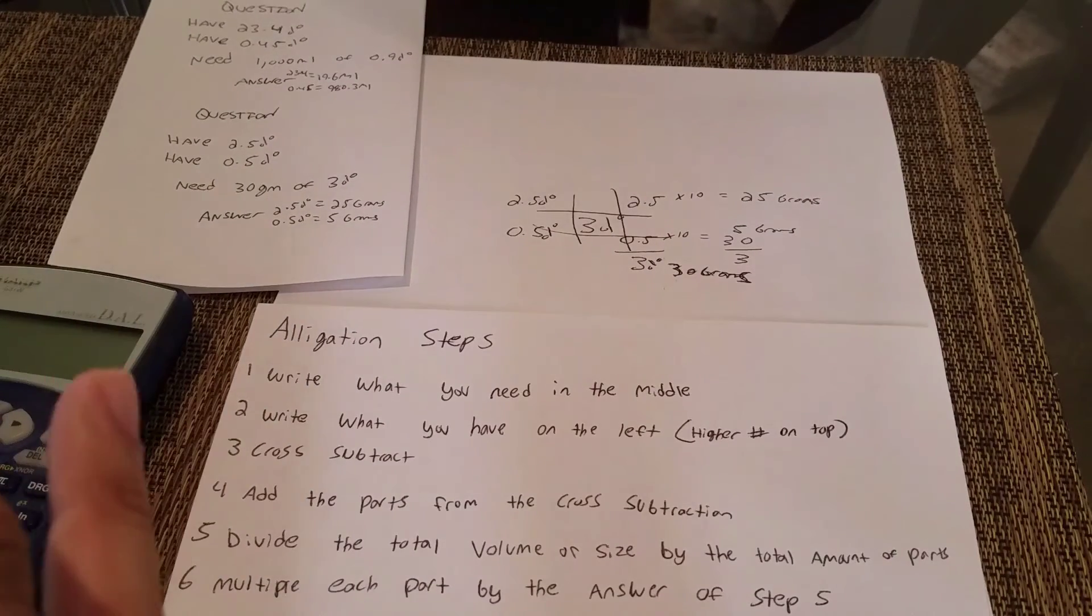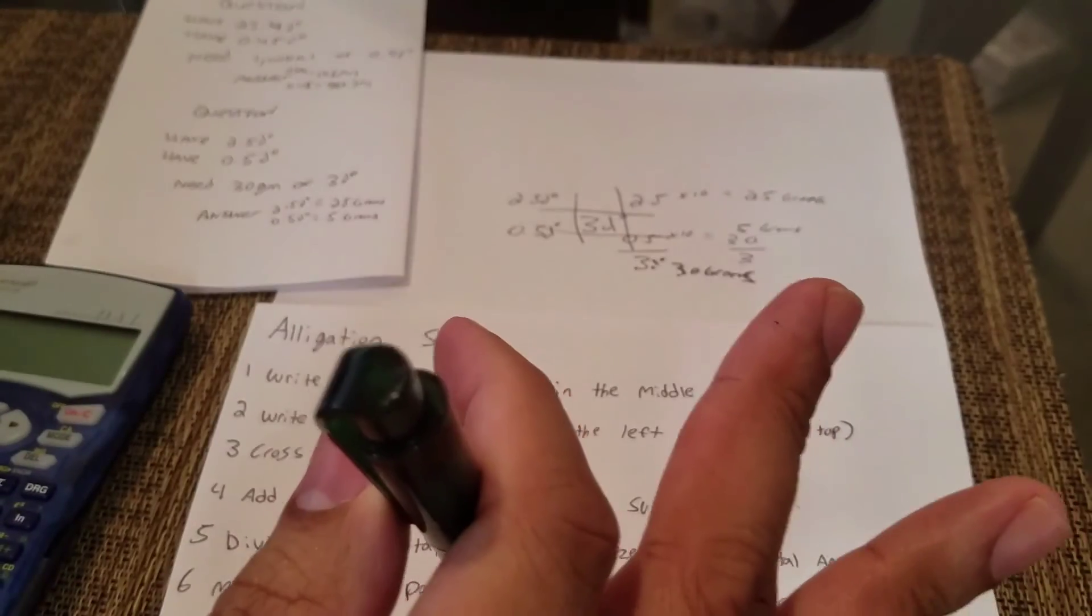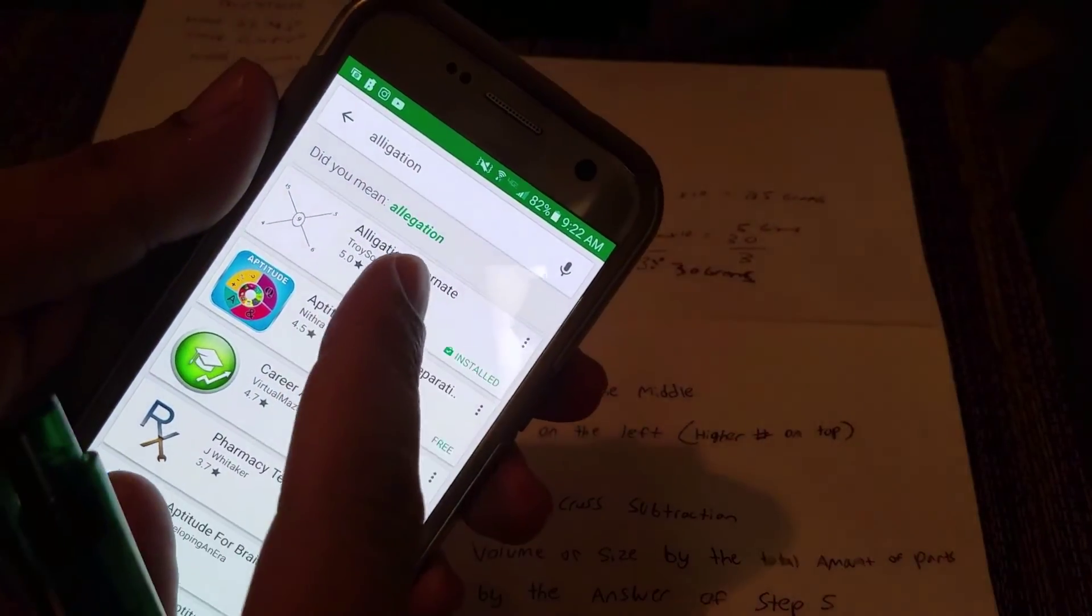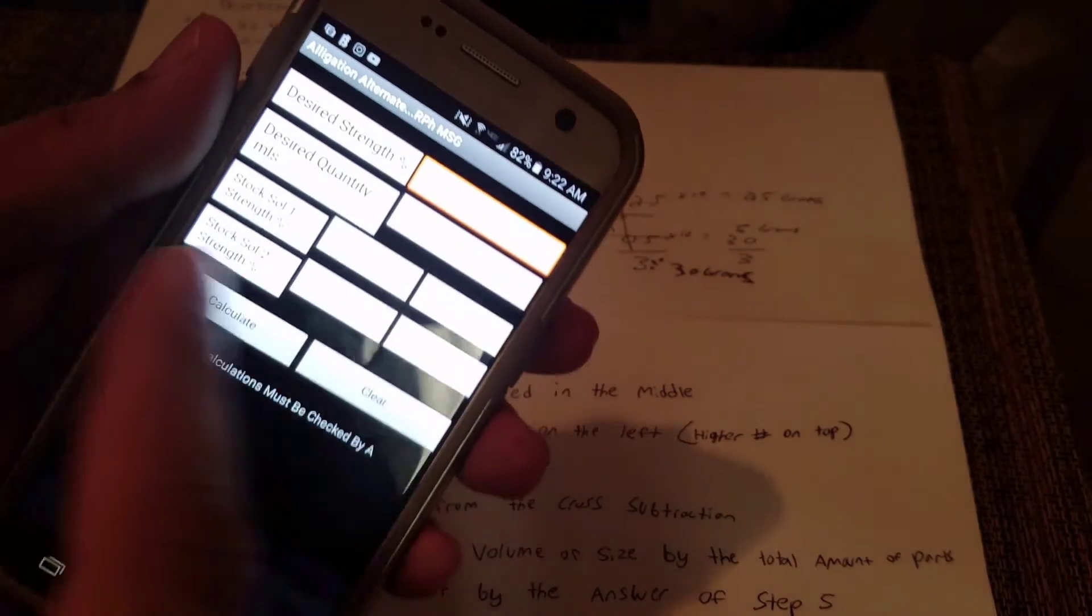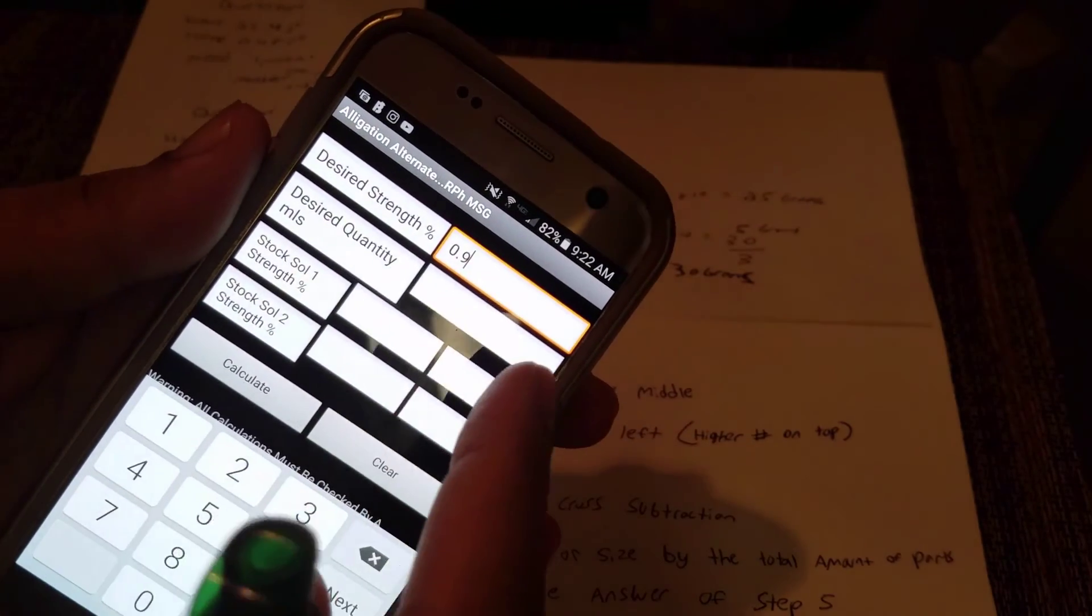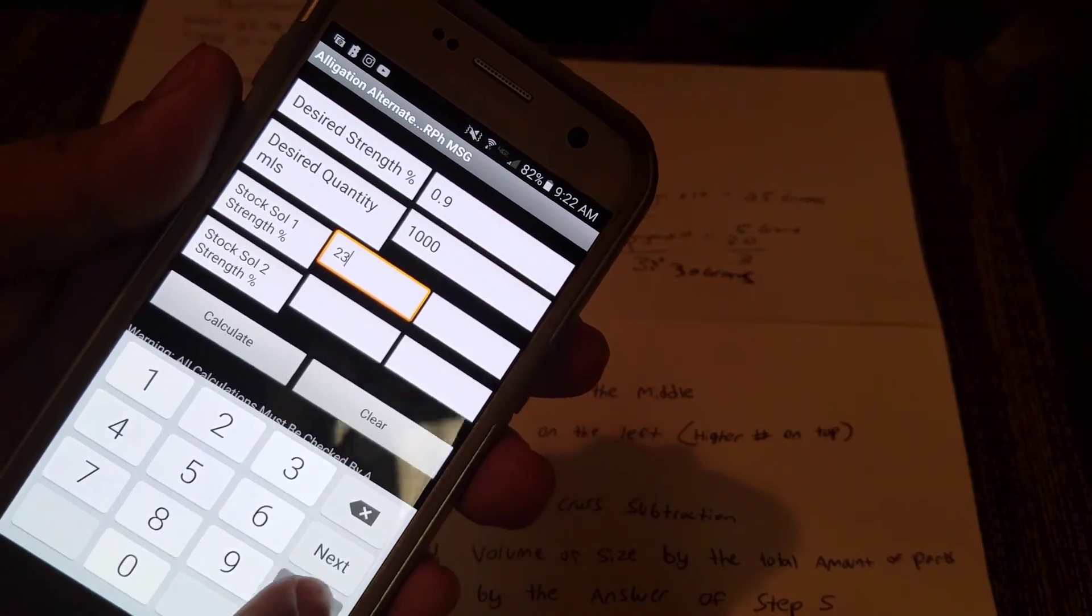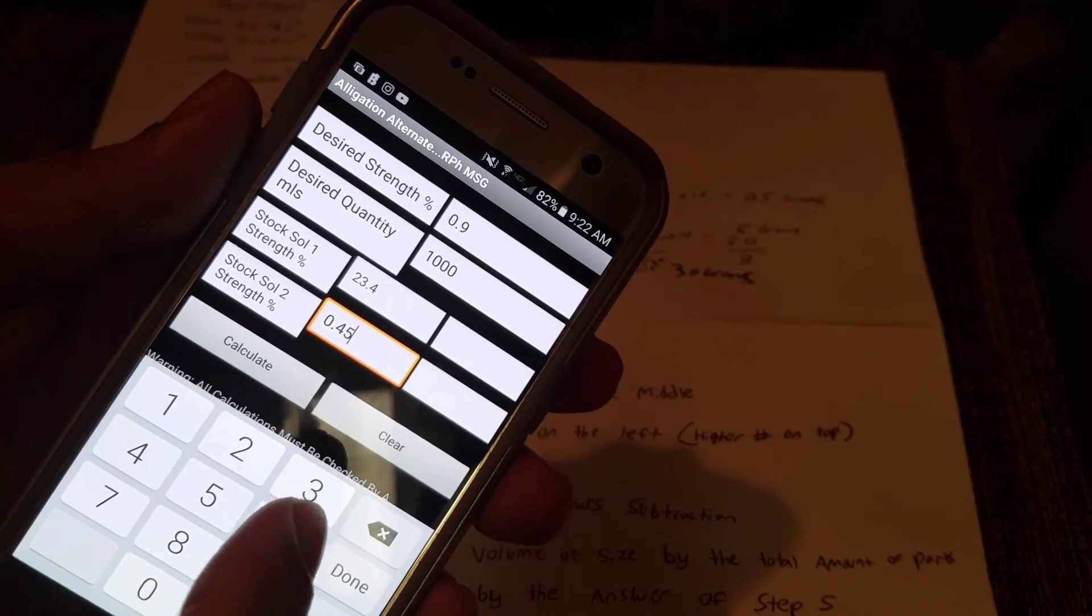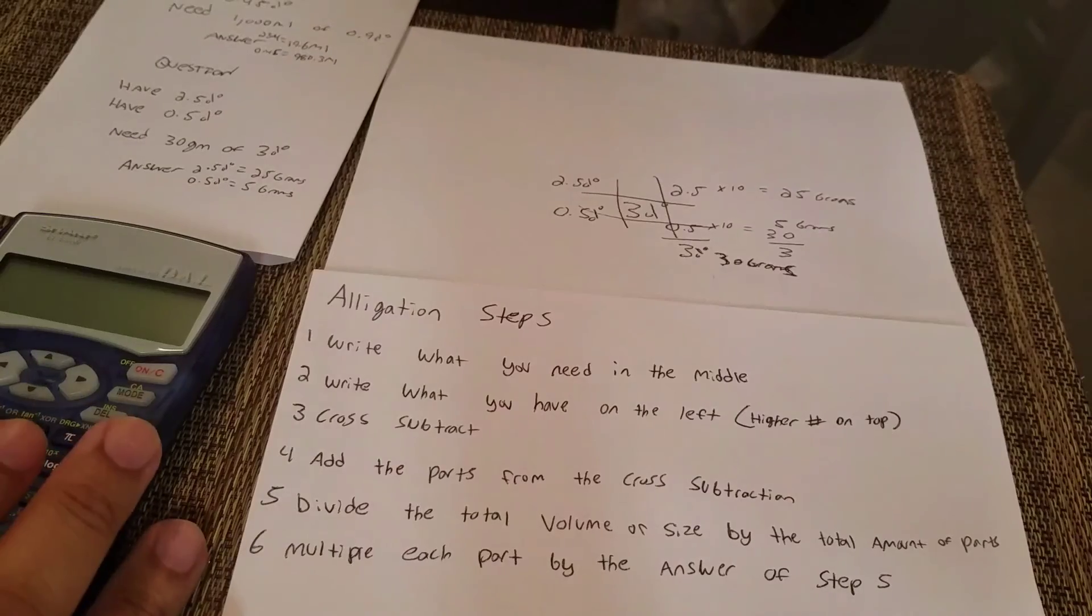As I promised you guys, the life hack to getting through this easily, quickly, and skipping all these steps and doing alligations in seconds is, take a wild guess, you take yourself over to the Android market. There's only one app on the Android market that I know of that has the alligations calculator. That's it, that simple. And like I told you, you need four bits of information: the desired strength is normal saline 0.9%, desired mL is 1000 mL, stock solution the first one we have is 23.4%, and the other stock solution is half saline 0.45%. Calculate that, it gives us the answer: 19.61 and 980.39. So that's it.